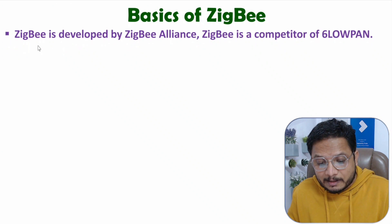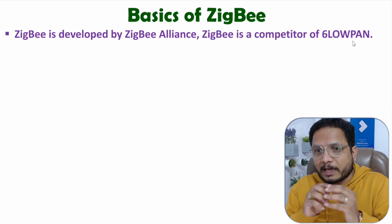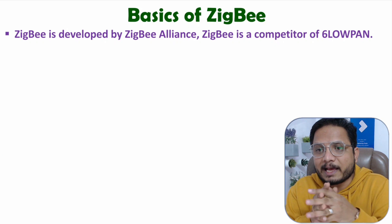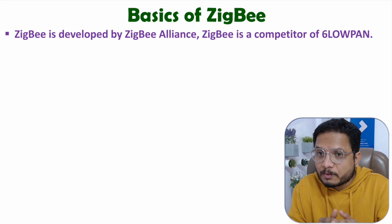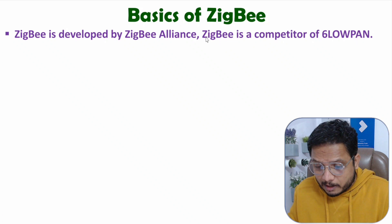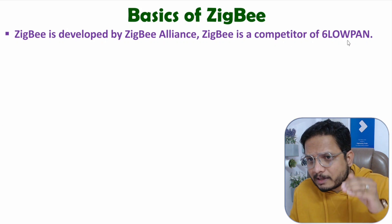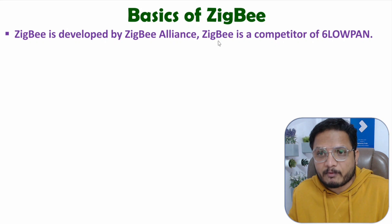ZigBee is developed by ZigBee Alliance, and ZigBee is a competitor of 6LoWPAN. In IoT networks, we need low-power personal area networks. With the use of 6LoWPAN or ZigBee, we can create such low-power personal area networks. I have made a video on 6LoWPAN in the IoT lecture series — you can go through it. In this video, I will explain how ZigBee functions.